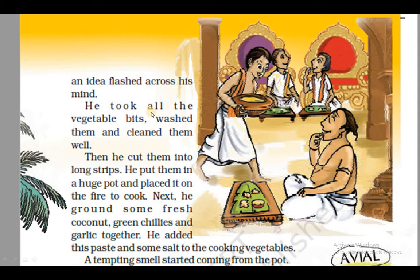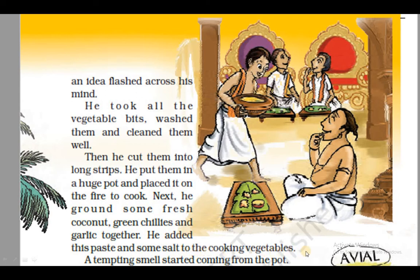Suddenly, achanak se, an idea flashed across his mind — flashed across means koi bhi cheez achanak se sochna. He took all the vegetable bits, washed them and cleaned them well — usnei sabhi vegetables ke tukde liye, unko achse se dhoya aur saaf kiya. Then he cut them into long strips — strips lumbe tukdon mein — usnei unko lumbe tukdon mein kaata. He put them in a huge pot — huge pot bada ghada — and placed it on the fire to cook. Cook used here as a verb — cook yahan pe verb ke rup mein use hua hai.